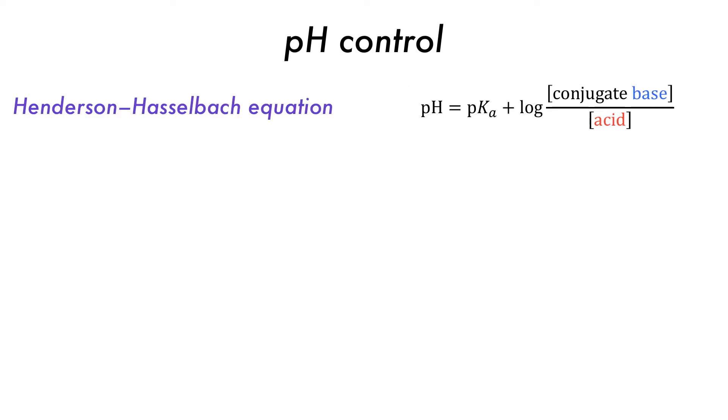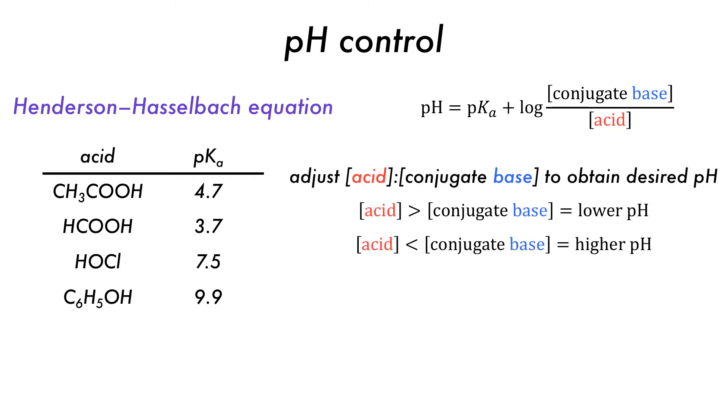pH control is fundamental to the functioning of buffer solutions. This can be seen in the Henderson-Hasselbalch equation. The equation tells us that to control a pH, we must first select an acid with a pKa value near the desired pH, and must have a ratio of acid to conjugate base concentrations that allows choice of the exact pH.